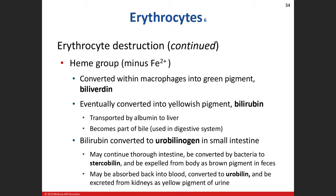After removing iron from the heme group, we bring in macrophages, which break down the heme group and convert it through a series of enzymatic reactions into bilirubin. You've probably heard of bilirubin — babies with a yellowish pigmentation have high levels of bilirubin.